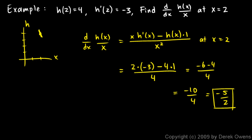Now I want to address one question. One of my students asked: when we do the low d high minus high d low, and we do the derivative of the denominator right here — if x is 2, why don't we say the derivative right there is 0?